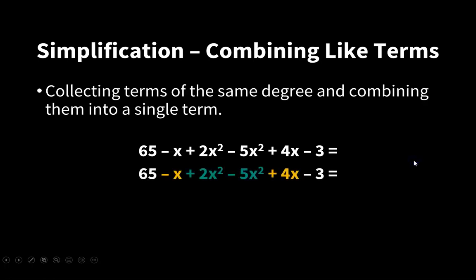We start by organizing the polynomial, we define the degrees of the terms, then we reorder them, and then we combine these like terms. We call these the like terms.